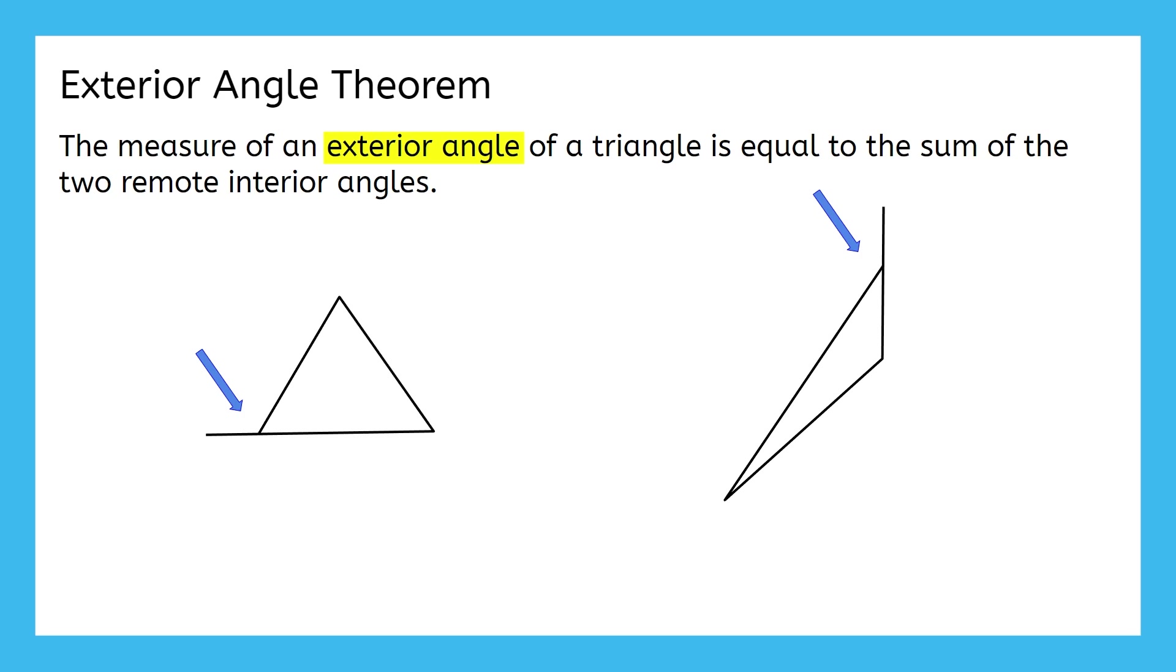Now that we know what an Exterior Angle is, let's define Remote Interior Angle. A Remote Interior Angle is an angle in the triangle that isn't adjacent to the Exterior Angle. That just means it's not touching the Exterior Angle. So, in our first triangle, we have three interior angles. But one of them is adjacent to the Exterior Angle, and the other two are remote.